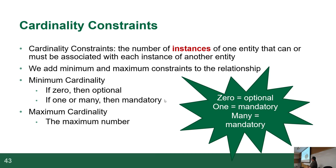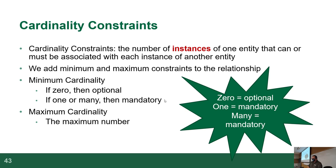Last week I left off talking about cardinality constraints, which was essentially setting up the rules of how relationships behave between entities. It has to do with the number of instances that any given entity can have in relation to another entity. We talked about one teacher, many students, each student may have many teachers, but for a course you'll have one teacher. We covered minimum cardinality and maximum cardinality — minimum is either zero or one.